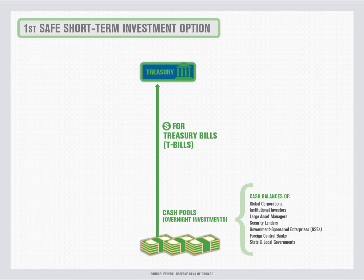So treasury bills satisfy investors' need for safe overnight investments. However, the supply of treasury bills is insufficient to meet the large demand for safe overnight investments. Therefore, cash pools must look for alternative cash-like investments.